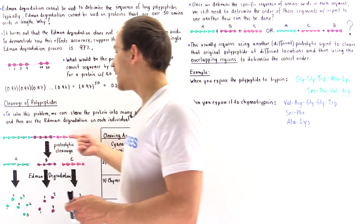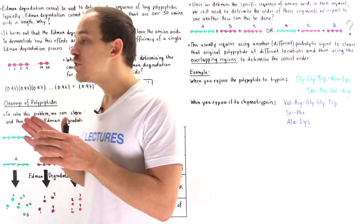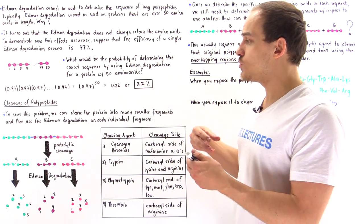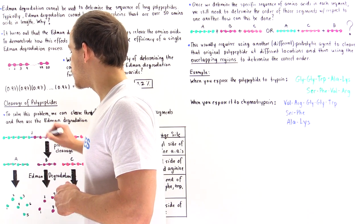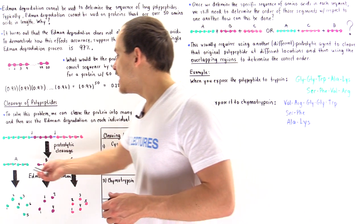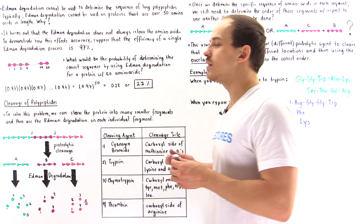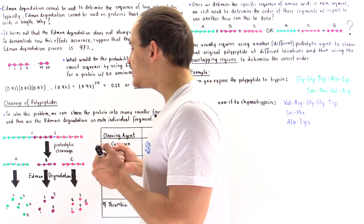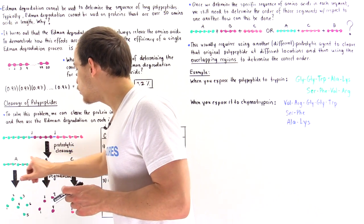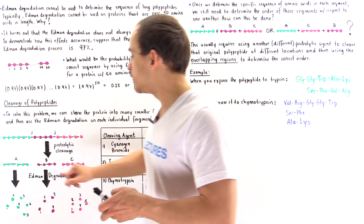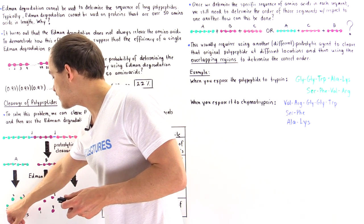Suppose we have a long polypeptide. We take it, mix it with some type of molecule that cleaves peptide bonds — for example, a specific biological enzyme — and we cleave it in two positions, producing fragments A, B, and C. We can then separate the fragments based on size using SDS-polyacrylamide gel electrophoresis, which allows us to isolate these three different fragments.